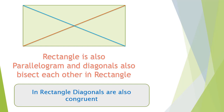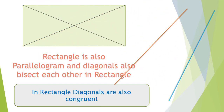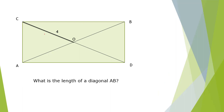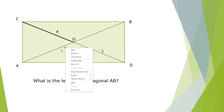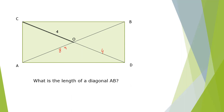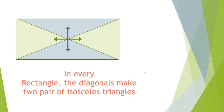A rectangle is also a parallelogram, so its diagonals bisect each other. Additionally, in a rectangle, the diagonals are congruent — they have the same length. For example, if CO is 4, then OD is also 4 because diagonals bisect each other, so CD is 8. Therefore AB is also 8 because it is a rectangle and diagonals are congruent. One more fact: in every rectangle, the diagonals make two pairs of isosceles triangles.